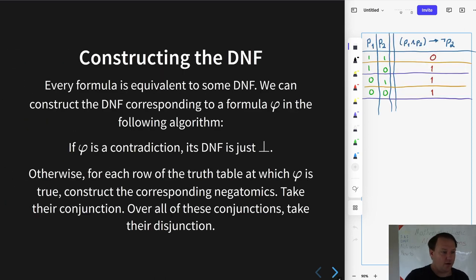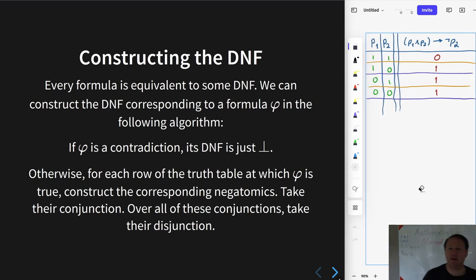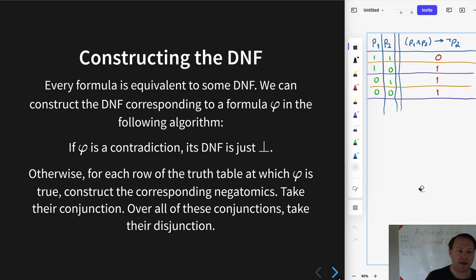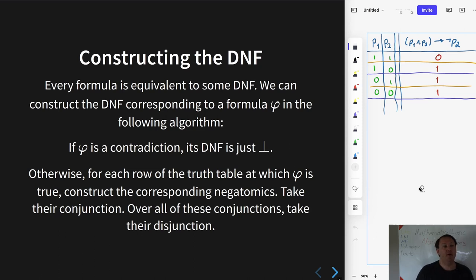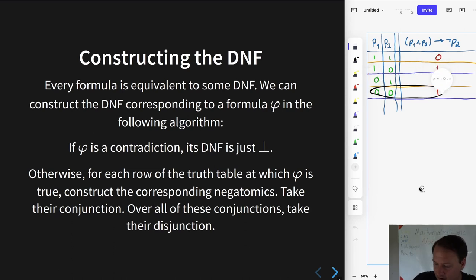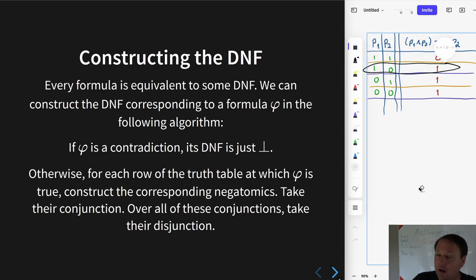On the whiteboard I've drawn the truth table of a particular example sentence, and now let's go through the algorithm to determine its equivalent disjunctive normal form. It's not a contradiction, so at least one row of the truth table is true. We can do the interesting part of the algorithm: take the first true row and use it to construct φᵢ.